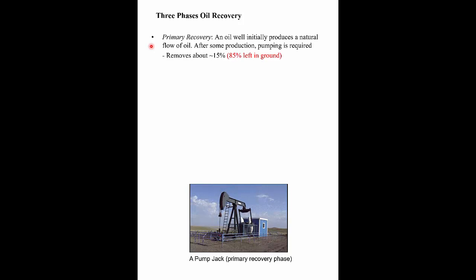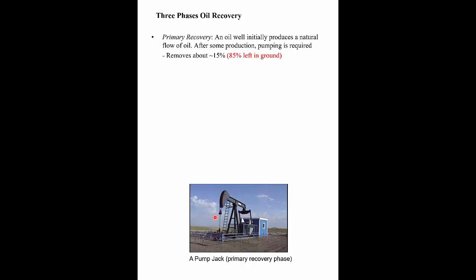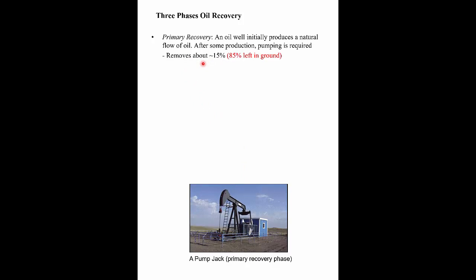We use something called a pump jack — an electrically driven motor driving this pump jack, going up and down like a hand pump. You've probably seen these in parts of the world with oil production. Primary recovery recovers about 15% of the oil from the ground. So in round numbers, you get about 15% of the oil out, leaving 85% of the resource still in the ground at that point.